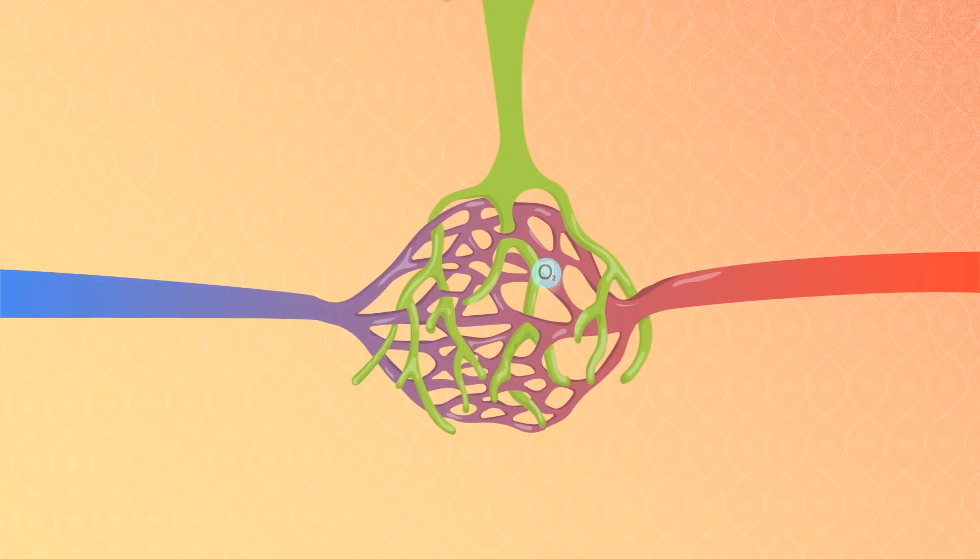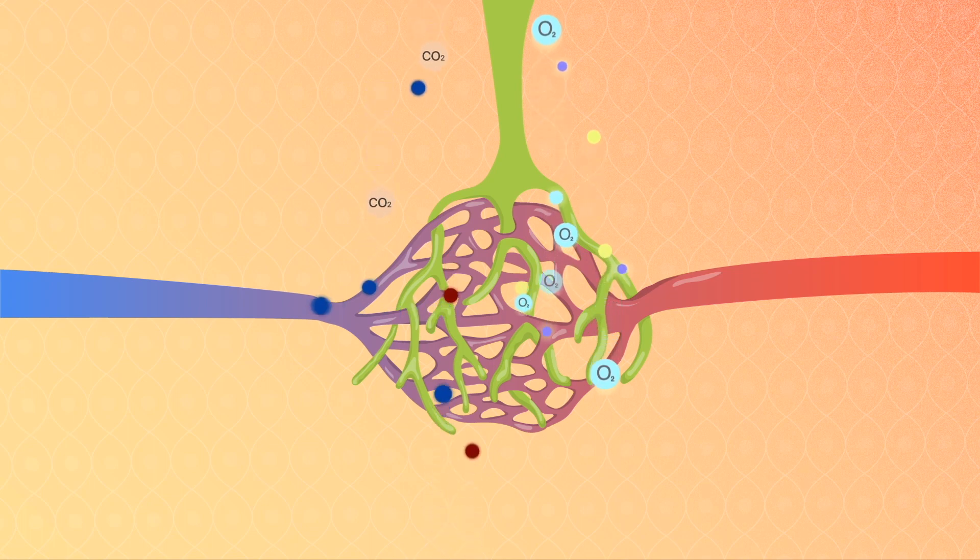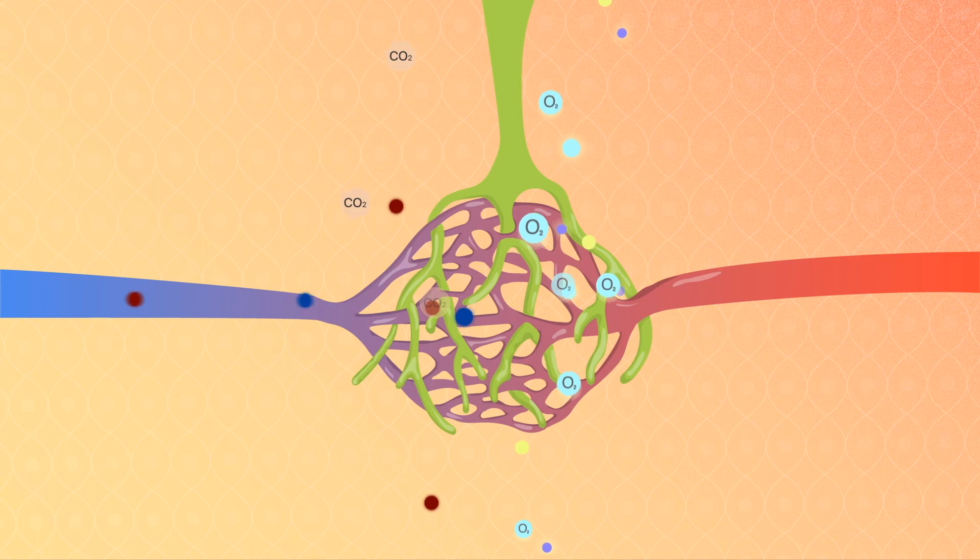Every day, the capillaries allow 20 liters of fluid through, but only 17 liters are returned via the bloodstream. The other three liters become lymphatic fluid that is returned to the heart via the lymphatic system.